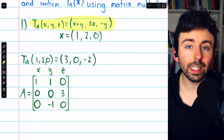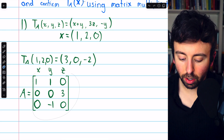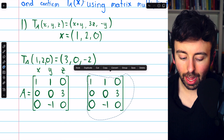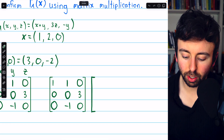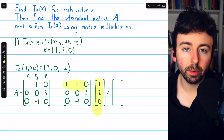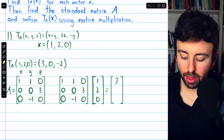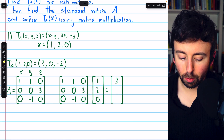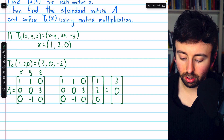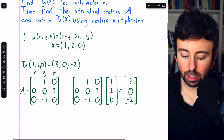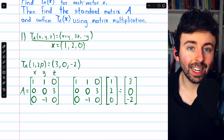This linear transformation just multiplies the input vector by the standard matrix A. So if we take matrix A and multiply it by the input vector (1, 2, 0), we should get (3, 0, −2). Matching the first row with the column gives 1 plus 2, which is 3. The second row gives 0. The third row gives negative 2. So (3, 0, −2) agrees with our previous answer — multiplying by the standard matrix accomplishes the transformation exactly as described.